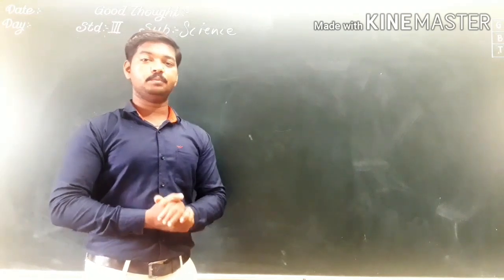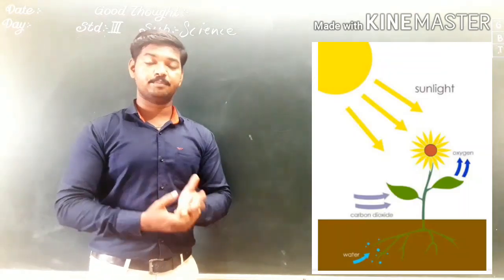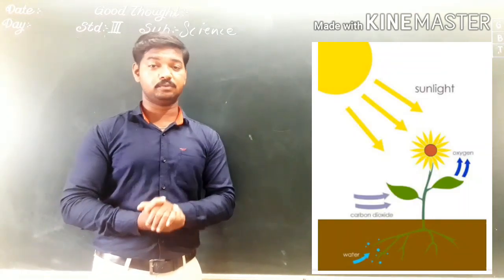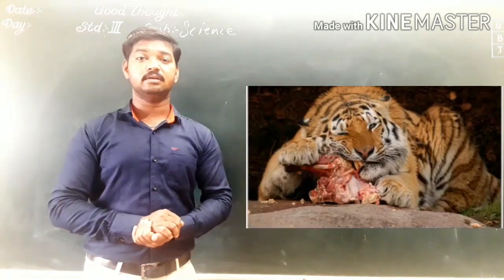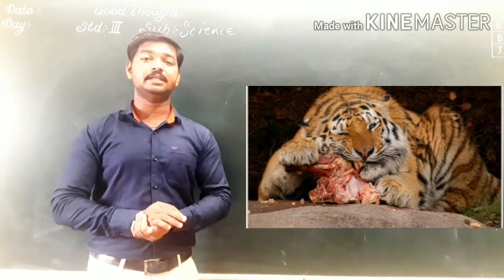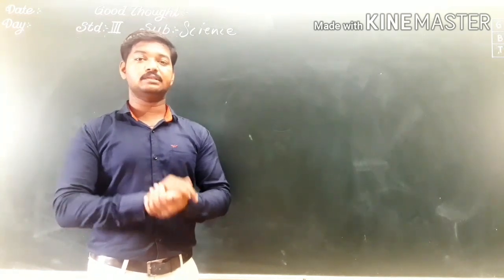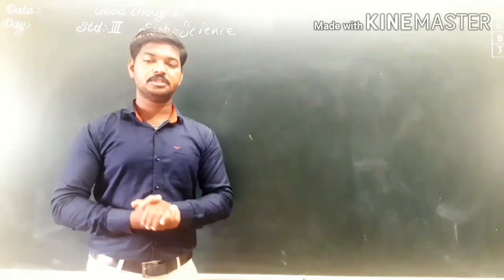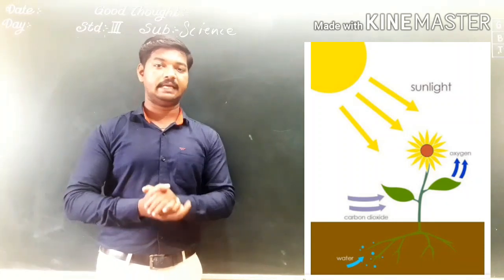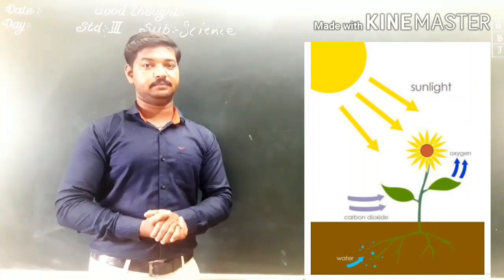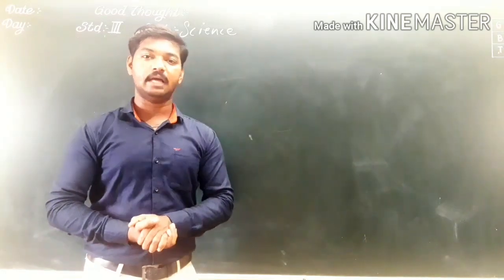We will see so many animals in our surroundings, like a cow eating grass, plants making their own food, and animals like tiger and lion hunting other animals and eating their flesh. We also need food to live. Most plants make their food with the help of water, air, and sunlight. Animals get their food from plants and other animals.